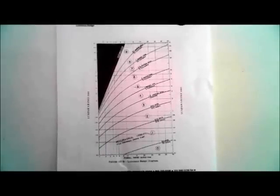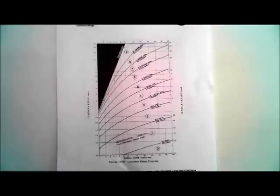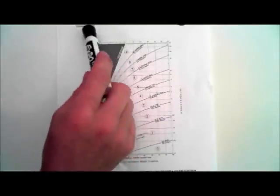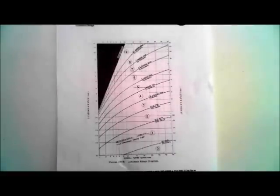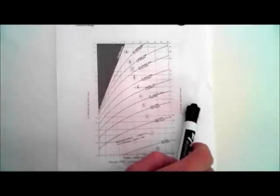This is our luminous range scale. It is a logarithmic scale which gives you luminous range based on a nominal range and a visibility for that day. We have visibility curves, luminous ranges on both sides, and nominal ranges on the top and on the bottom. If you print the PDF supplied, nominal range is on the bottom, luminous range on the side, and the visibility curves.